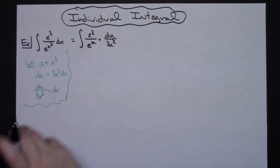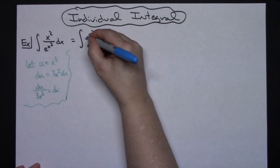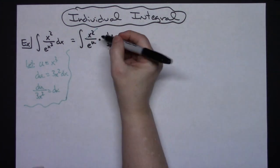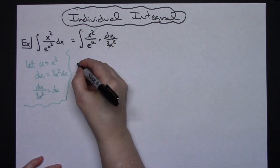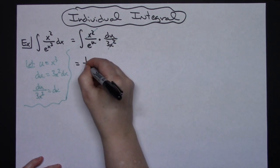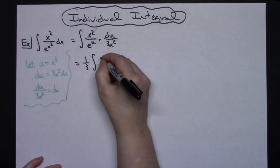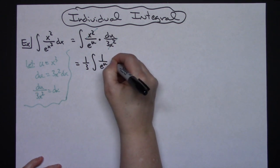What that's going to allow me to do then is to go ahead and cross off those x squareds, and it's going to let me pull the 1 third out in front. So then I'm going to have 1 third the integral of 1 over e to the u du.